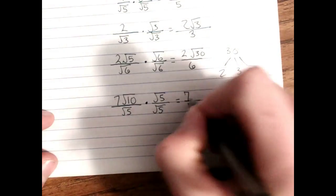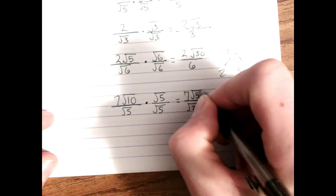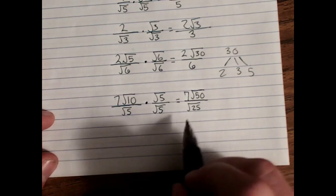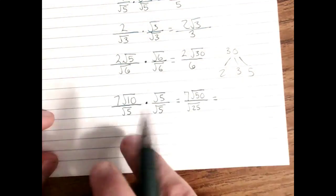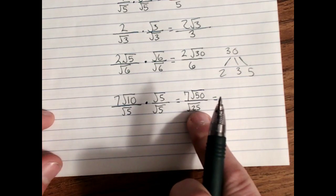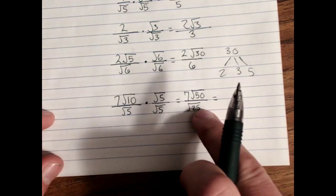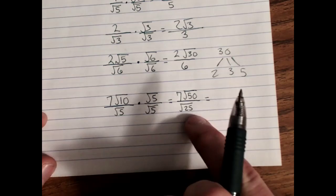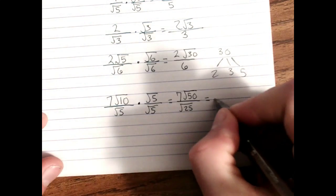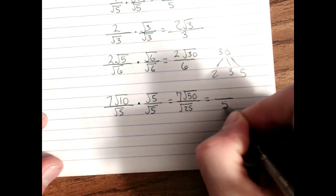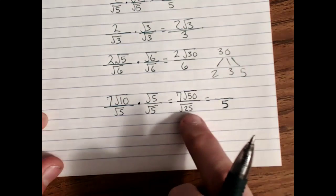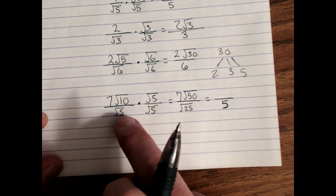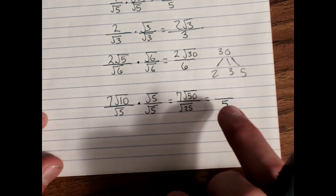On top, we have 7 times root 50 because 10 times 5 is 50. And now you can really see why the denominator turns out the way it does. 5 times 5 is 25, but they're both underneath the square root. So root 5 times root 5 is root 25, and root 25 is just 5. So this is what goes on behind the scenes. But mentally, or when you write it out, you really just want to know root 5 times root 5 is just 5.